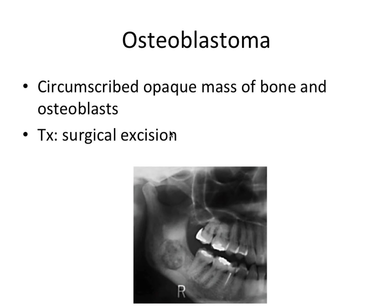Next we have the osteoblastoma. This is a circumscribed, opaque mass of bone and osteoblasts. As you can imagine, if we're talking about mineralized tissue, it's going to appear radiopaque. Treatment is surgical excision.